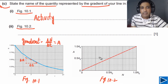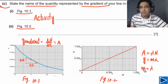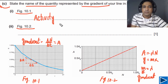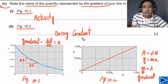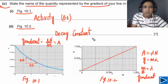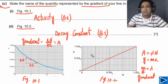For figure 10.2, we have A = λN. Comparing with y = mx, the gradient m equals λ, the decay constant. So the gradient of this line represents the decay constant. This question has two marks — one mark for writing 'activity' for figure 10.1, and one mark for writing 'decay constant' for figure 10.2.